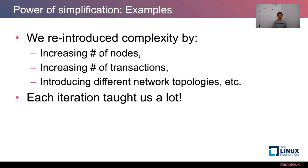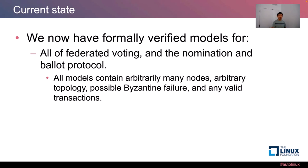After simplifying a lot and getting simple steps done, we started reintroducing complexity — increasing the number of nodes, number of transactions, and network topologies. Each iteration taught us a lot. It was quite interesting to learn how Ivy understands the SCP or each part of it, and we also learned a lot about Ivy and formal verification. After many iterations, we finally have a formally verified model for each of federated voting, the nomination protocol, and the ballot protocol — covering all parts of the Stellar consensus protocol. All these models handle any number of nodes, any topology, some nodes could be Byzantine, and they can process any number of valid transactions.